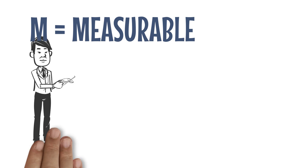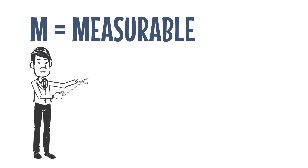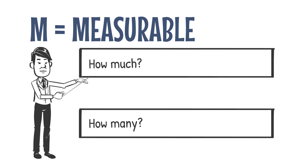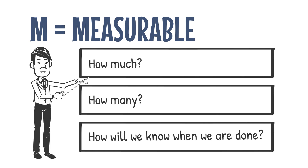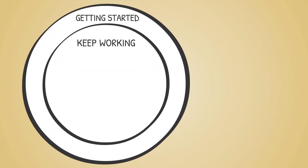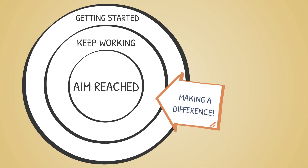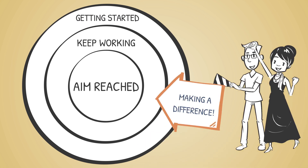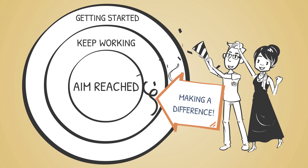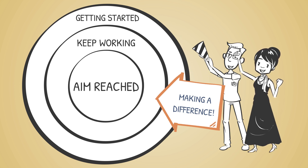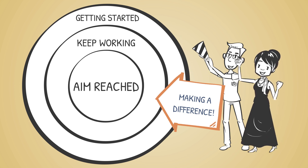M is measurable. It is important to have measurable aims so that you can track your progress and know if and when you have achieved your aim. A measurable goal should address questions such as how much, how many, and how will we know when we're done? It can also be very motivating to see that progress is being made. Measuring and monitoring goals periodically can reaffirm that all effort is making a difference and encourages people to keep working towards the aim.